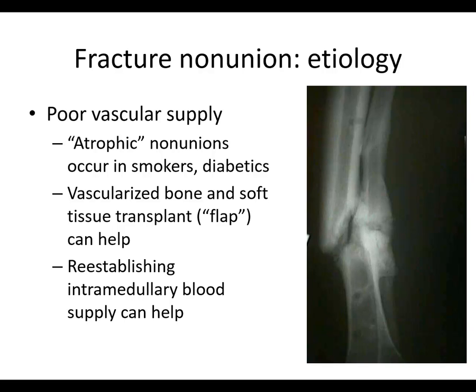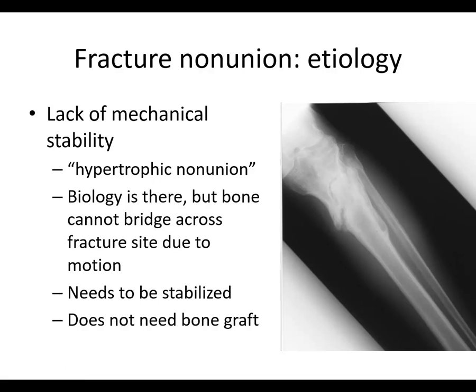What about poor vascular supply? Atrophic nonunions can occur in smokers, diabetics, and patients who've had vascular injury. In these cases, vascularized bone and soft tissue transplants — so-called flaps — can help. When the intramedullary supply has been cut off, you can see the cortex coming down here and here, and the medullary canal is shut off. If you can break through this and reestablish the medullary supply during surgery, that could also help.